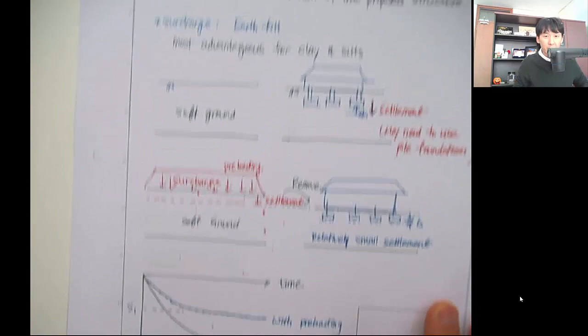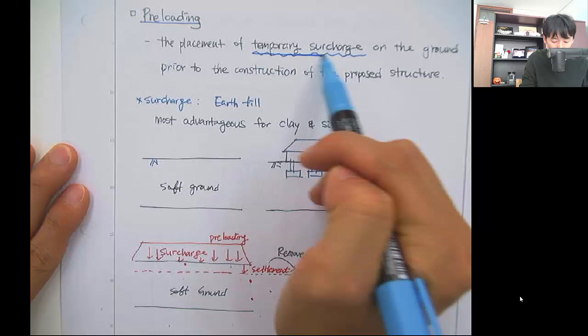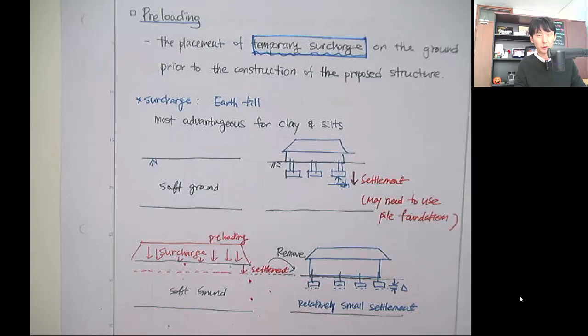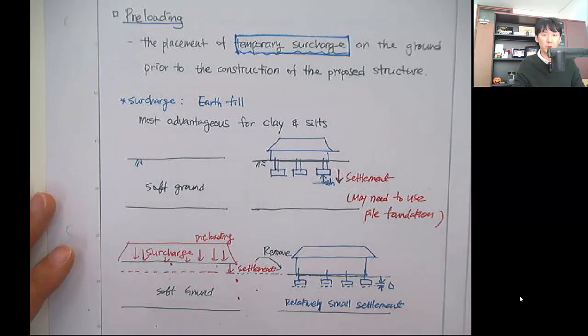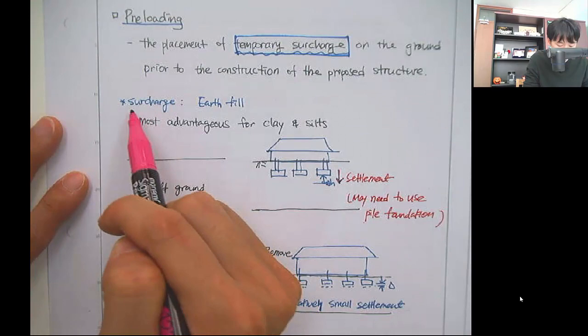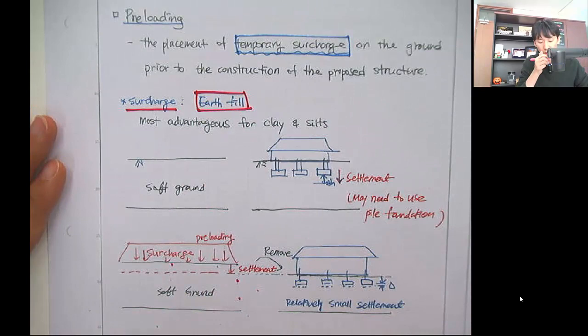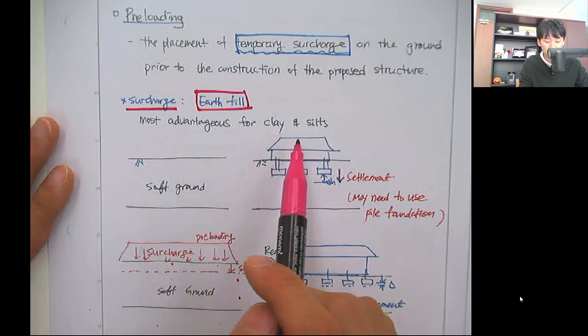What is preloading? Preloading is the placement of a temporary surcharge load on the ground prior to the construction of the proposed structure. You place an earth fill — dump the soil, compact it, and pile it up — to add additional weight on the soil to facilitate and accelerate consolidation settlement before constructing the actual building. The surcharge is also referred to as the earth fill, and this is most advantageous for clay and silty soils.